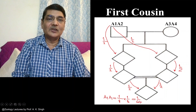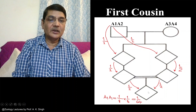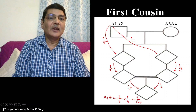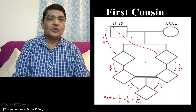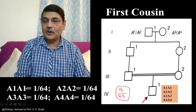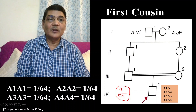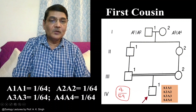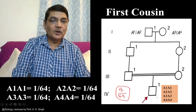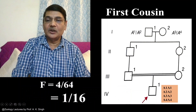Exactly the same way, the chance that this fourth generation individual will be A2A2 will also be 1/64. Chance of A3A3 will also be 1/64, because the first generation female can pass A3 to both left and right side paths, which can reach the fourth generation. So A1A1 homozygosity: 1/64; A2A2: 1/64; A3A3: 1/64; A4A4: 1/64. This individual will be homozygous for any of these four alleles with probability 4/64, and the final inbreeding coefficient is 1/16.